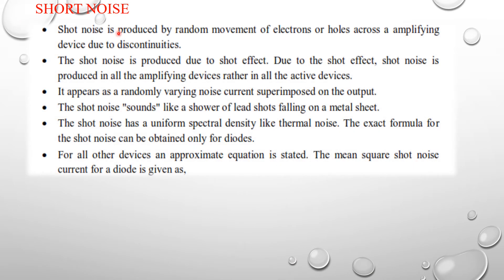Shot noise is one of the internal noises. It is produced by the random movement of electrons or holes across an amplifying device due to discontinuities. Shot noise is produced in all active devices and appears as a randomly varying noise current superimposed on the output. The shot noise sounds like a shower of lead shot falling on a metal sheet.